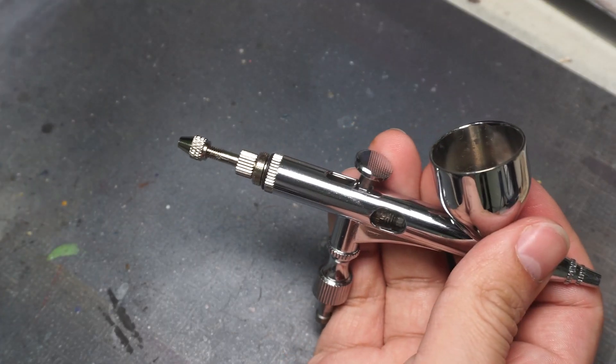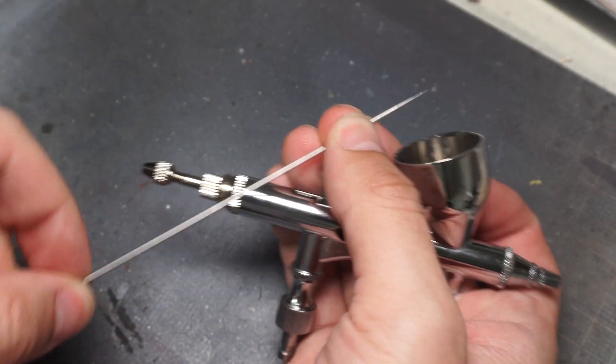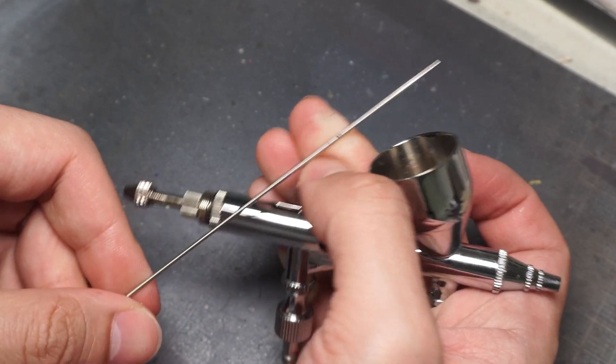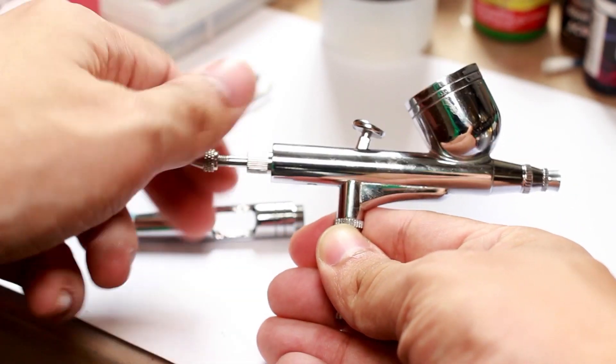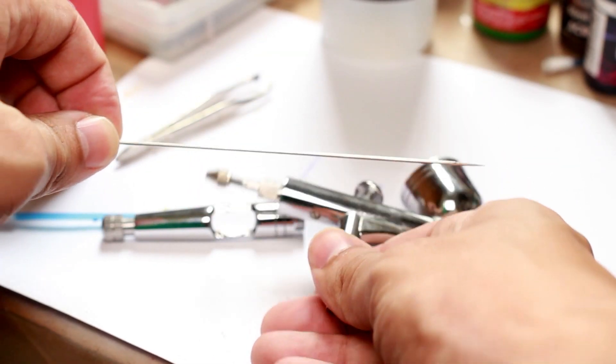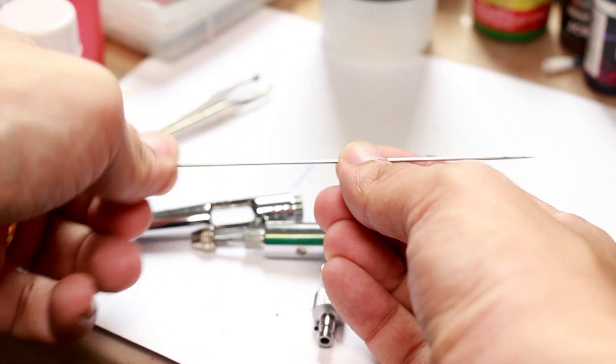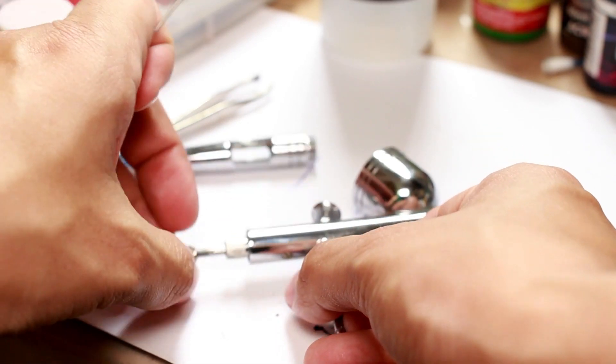Next you need to check if your needle is clean especially at the tip. Some airbrush models will require you to remove the back part in order to remove the needle. Others will require a little bit less effort in order to remove the needle. You can clean the needle with a brush, swab or just pinching the needle and pulling it back always in the opposite direction of the tip. Mine here looks good so I'm good to go.